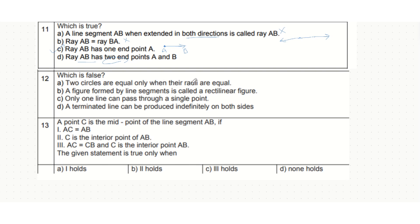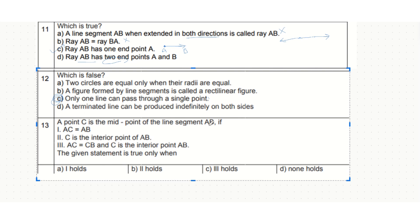Which is false? Two circles are equal when their radii are equal — yes. A figure formed by line segments is called a rectilinear figure — yes. Only one line can pass through a single point — no, multiple lines can pass through a single point, so this is false. Option C is false; the remaining options are correct. Also, if C is the midpoint of AB, then AC equals CB and C is an interior point of AB.